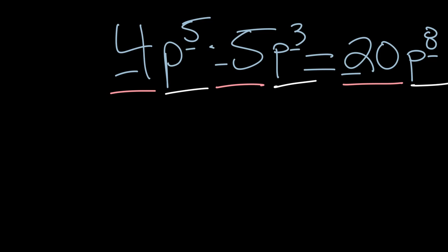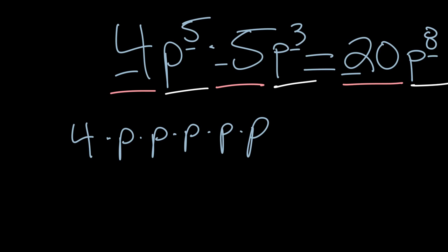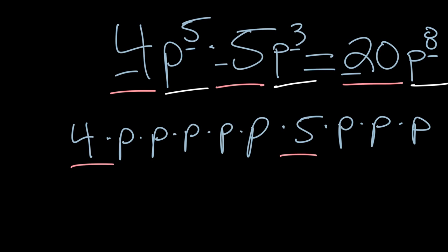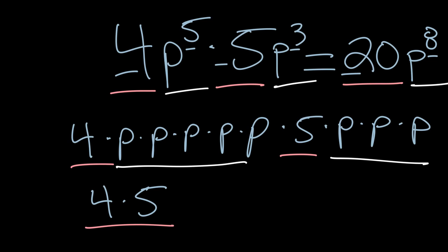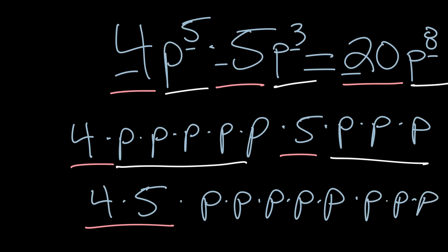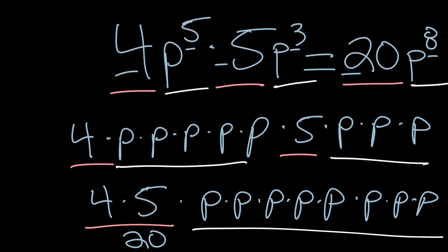To really see why this works, let's break it down. 4P to the fifth can be written as 4 times P times P times P times P times P — that's five P's. The second term is 5 times P times P times P. Grouping the numbers: 4 times 5 at the front, then count all the P's — five from the first term plus three from the second. That's 20 times P to the eighth, which is exactly what we got. That's the beauty of exponents — we can write that expanded expression as simply P to the eighth.